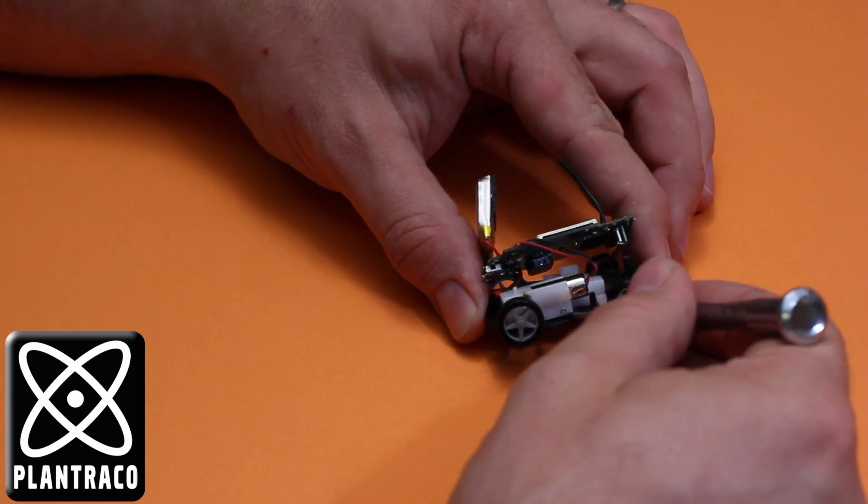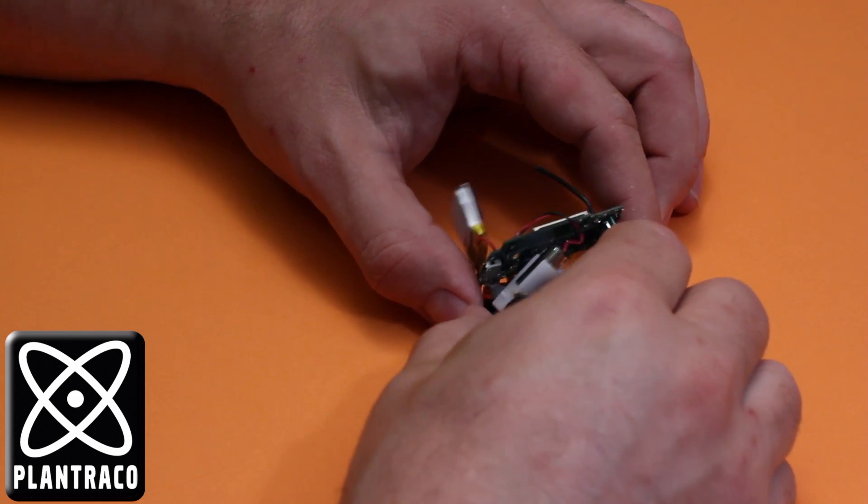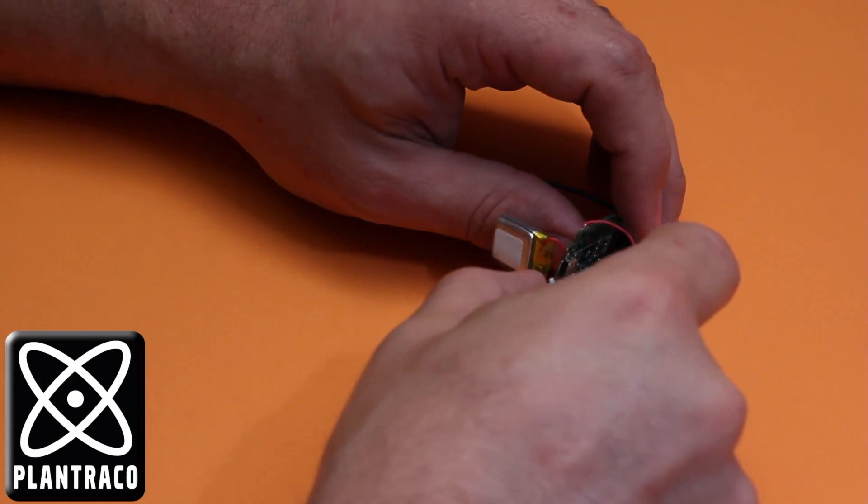I'm going to use a screwdriver just to pry underneath the front of this gearbox and you'll hear that plastic finger click. And then it kind of comes apart like this.